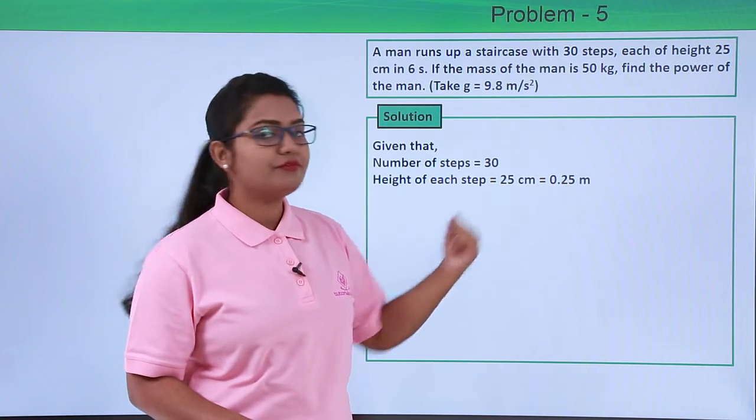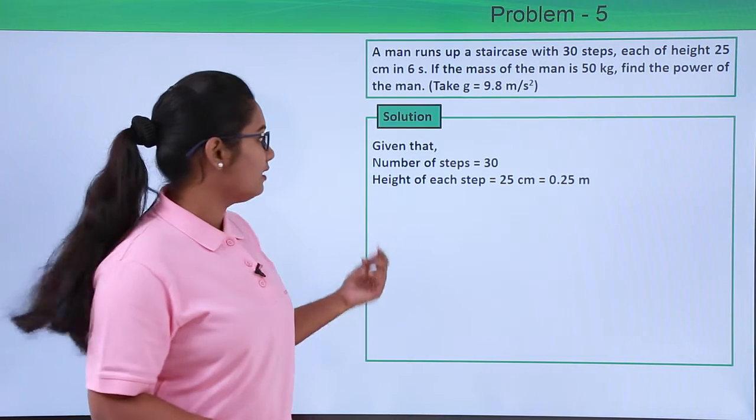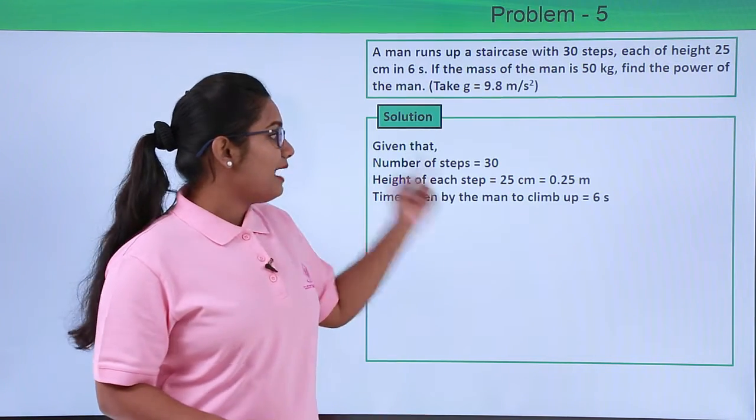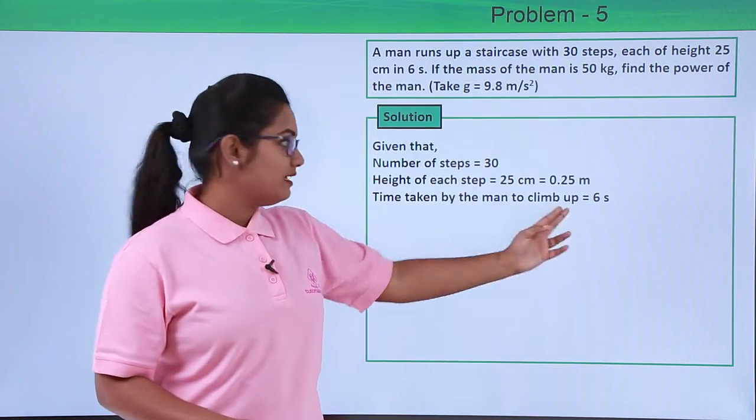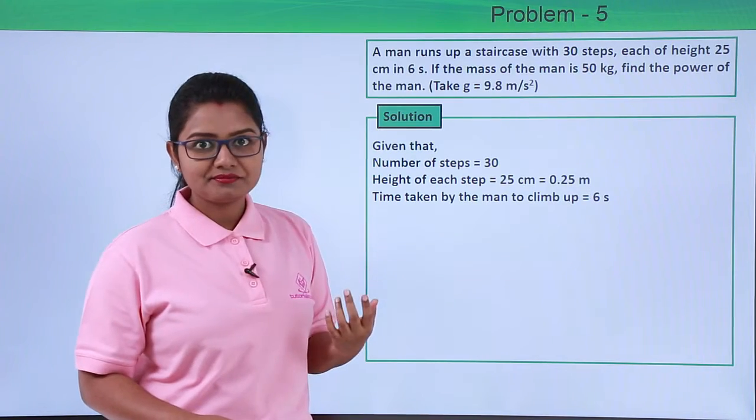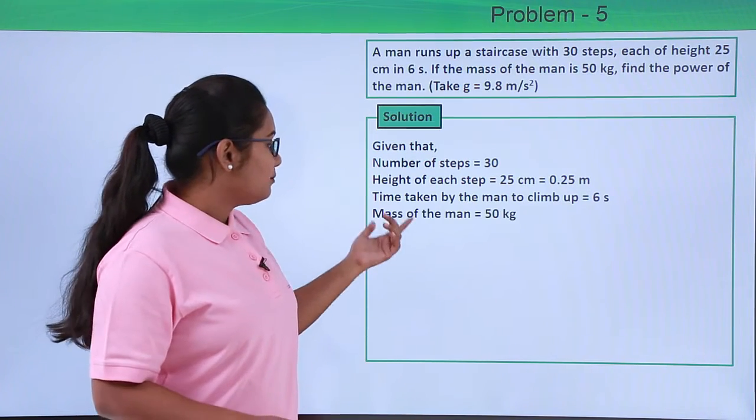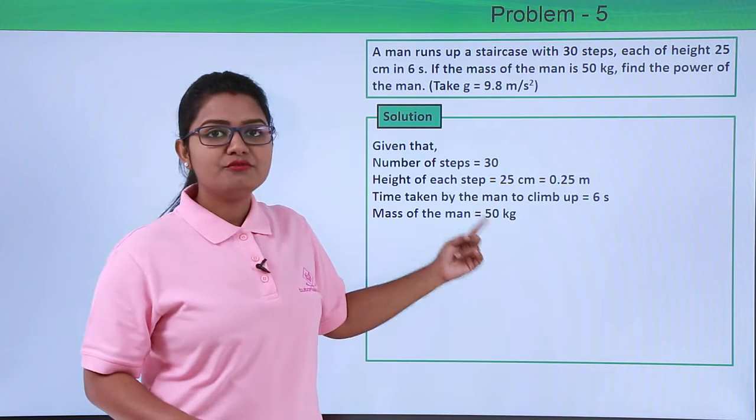gives 0.25 meters. Now the time taken by the man to climb up the whole staircase is 6 seconds, and the mass of the man is given to be 50 kg.